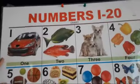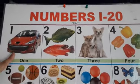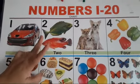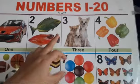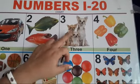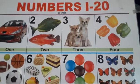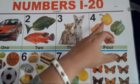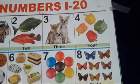Count with me. 1, 1 car. 2, 1, 2, 2 fishes. Number 3, 1, 2, 3, 3 doggie. Number 4, 1, 2, 3, 4, 4 capsicum.